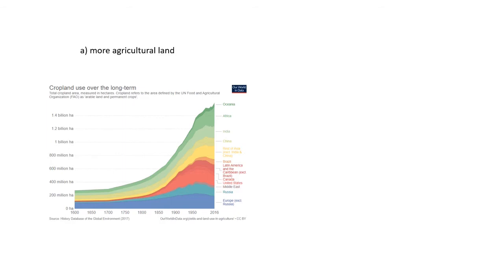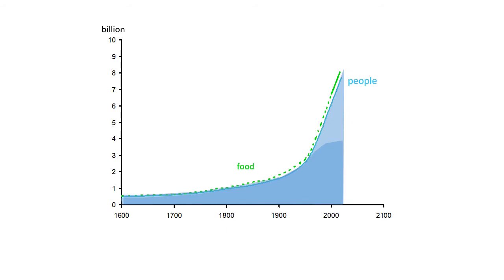The other factor is agricultural intensification — that's about how productive that agricultural land has been. And you can see that since the 1950s, productivity has increased maybe three or four times what it was before that. So as a result of these things, there's been a large increase in food supply as well. So far at least, food supply has kept pace with population growth, even though that population growth has been almost exponential. So this seems like pretty good evidence that Boserup was on the right track.